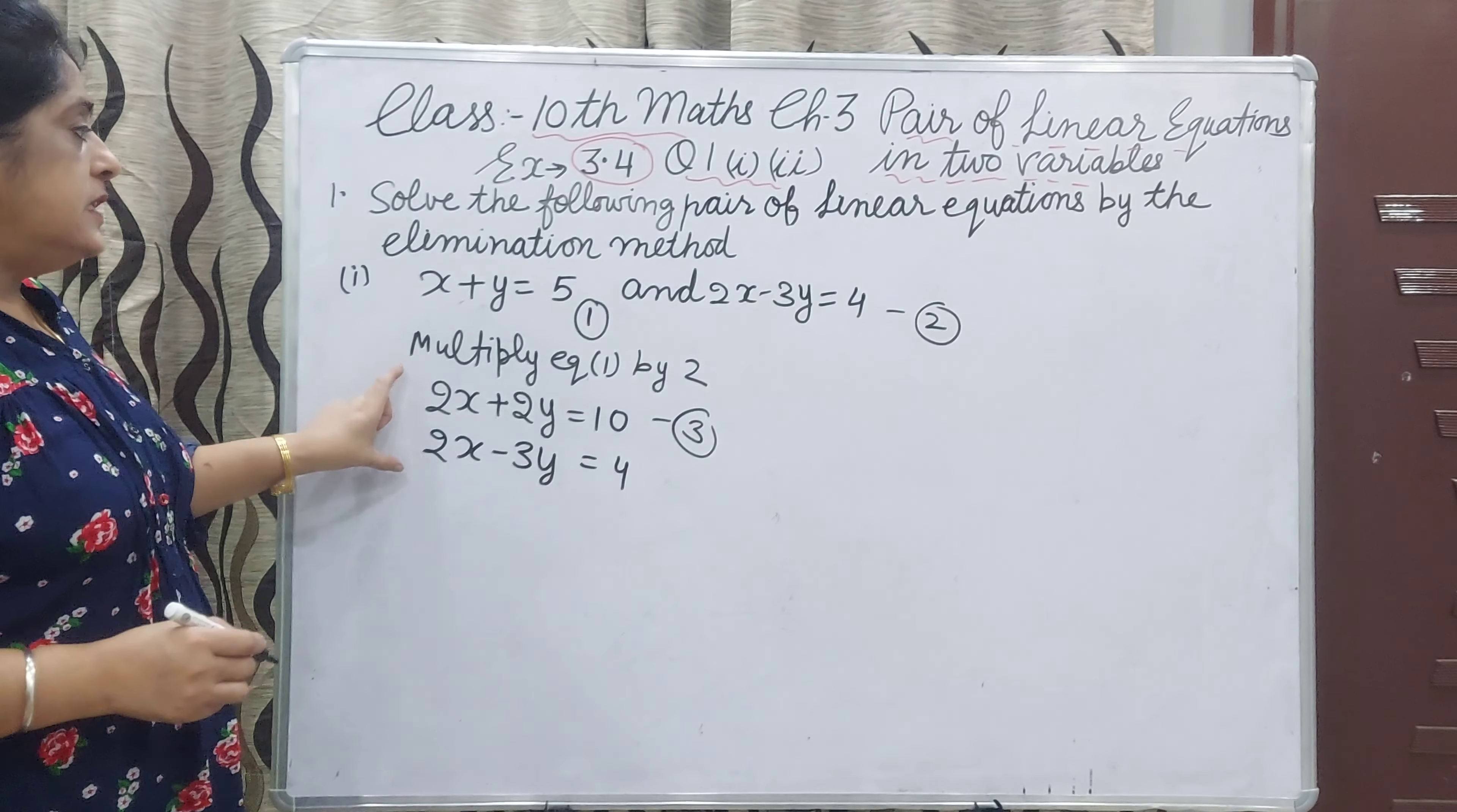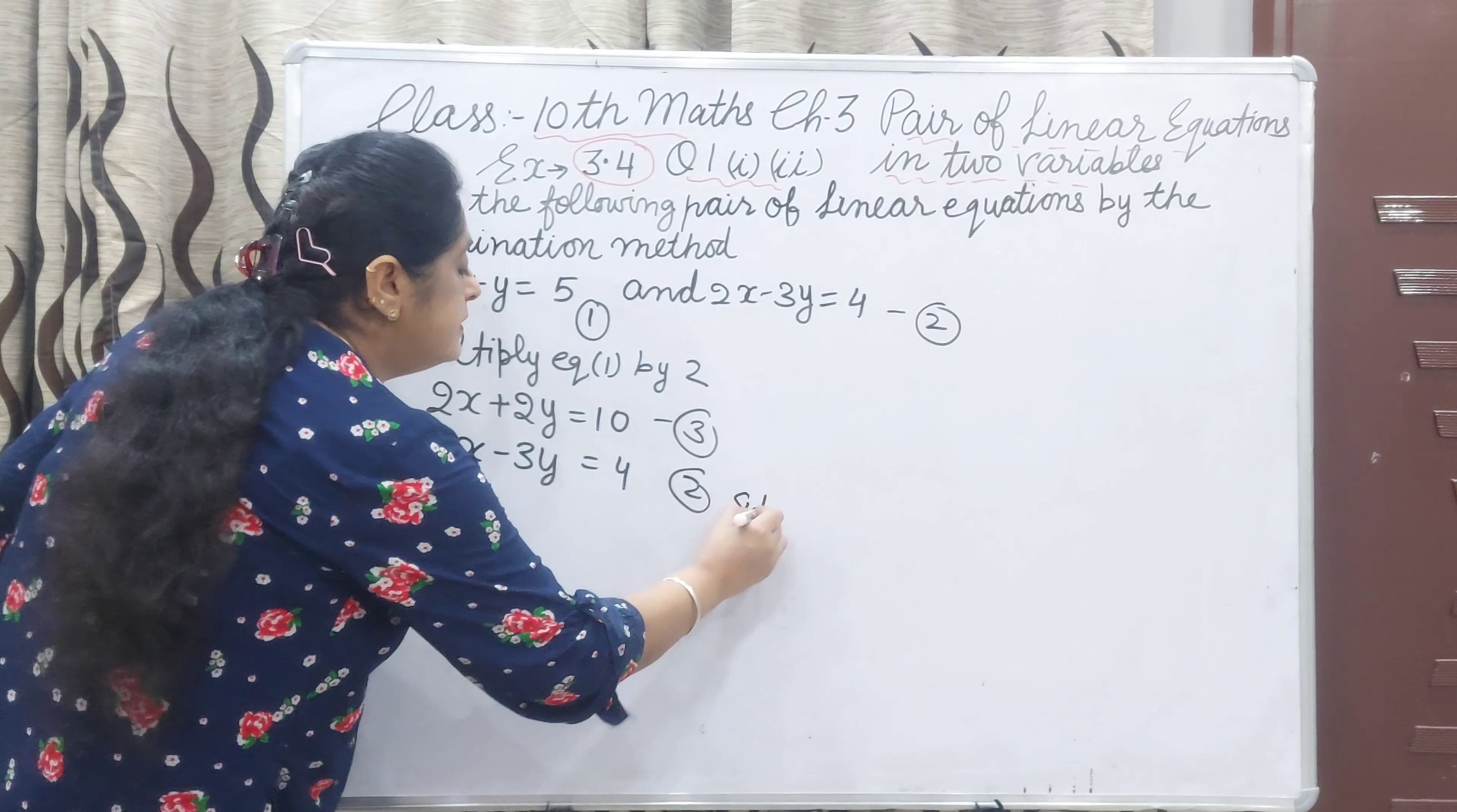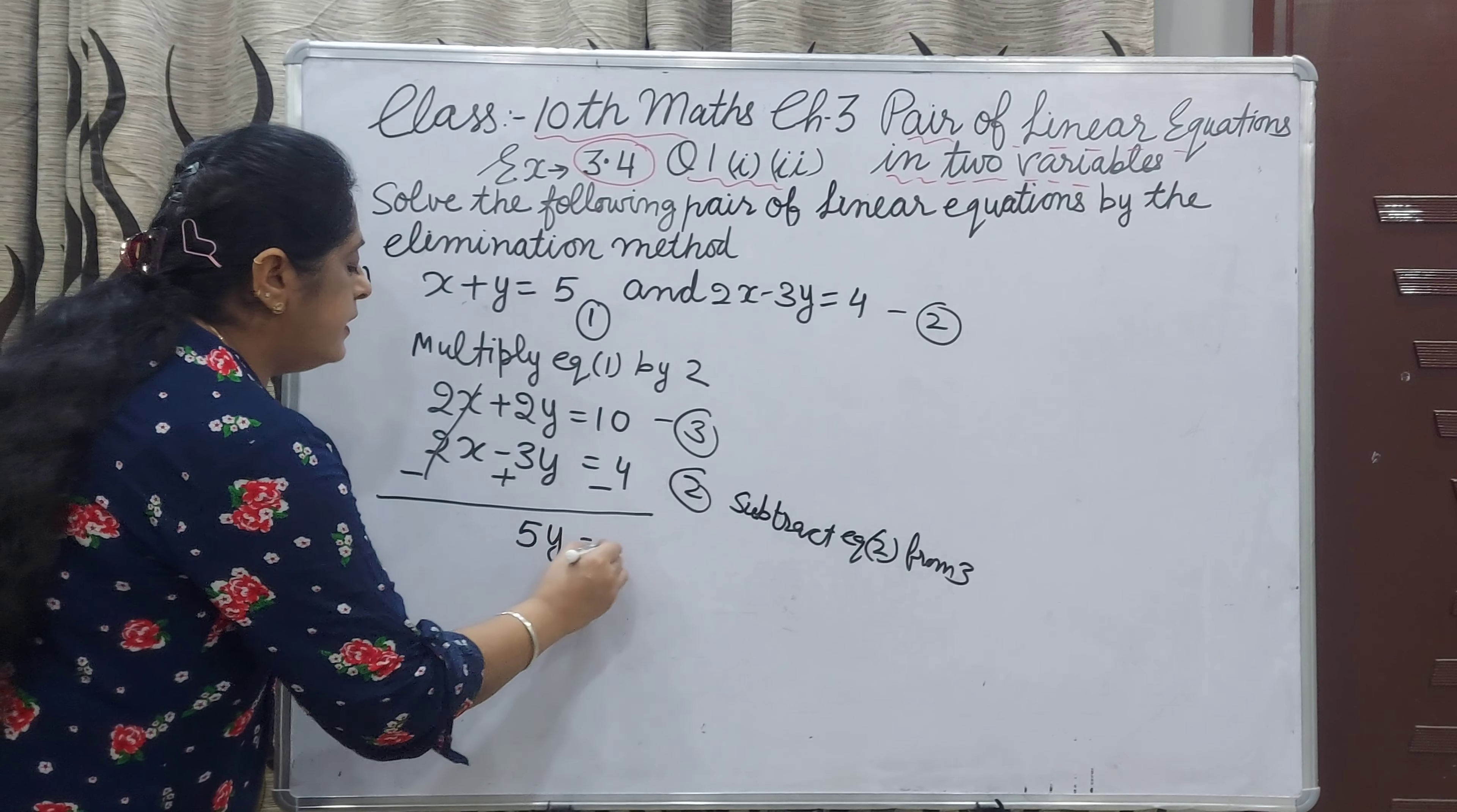If we add these two equations, then x will not eliminate. We have to subtract because here x is positive and here 2x is also positive, so one should be negative. We will subtract equation 2 from 3. Now change the sign: here will be plus and here will be minus. Here 5y equal to 6.